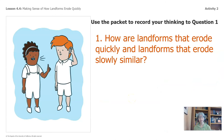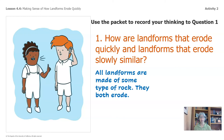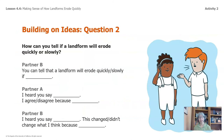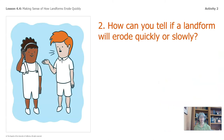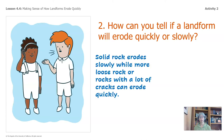Let's take a look at what some of you might have said. All landforms are made of some type of rock. They both erode. What about the second question: how can you tell if a landform will erode quickly or slowly? Pause the video if you haven't had a chance to ask your partner this question or to jot down your own thinking. Solid rock erodes slowly while more loose rock, or rocks with a lot of cracks, can erode quickly.